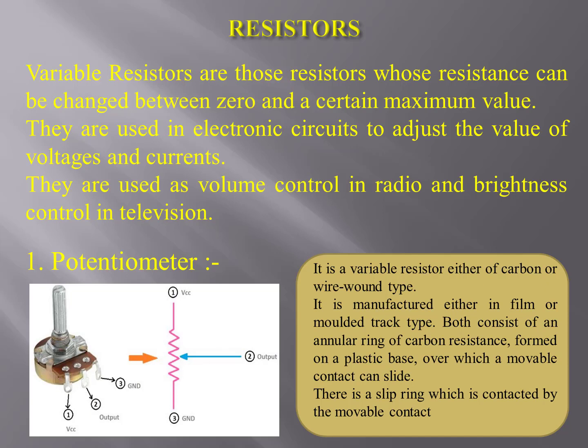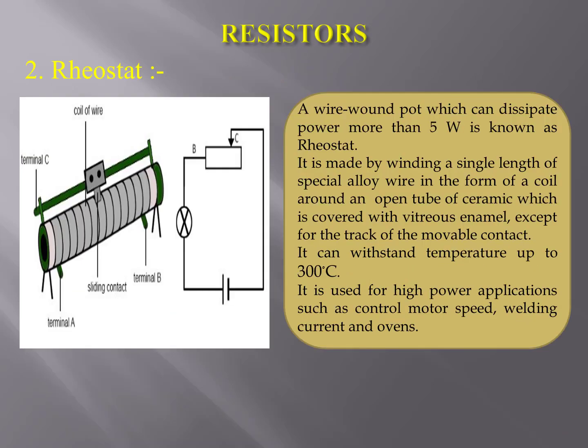Potentiometer: it is a variable resistor of either carbon or wire wound type. It is manufactured either in film or molded track type. Both consist of an annular ring of carbon resistance formed on a plastic base over which a movable contact can slide. There is a slip ring which is contacted by the movable contact.